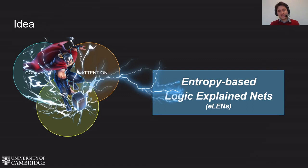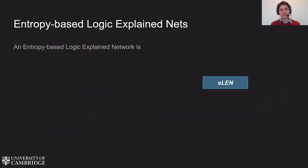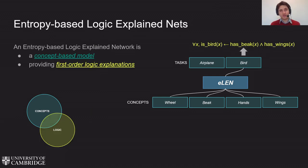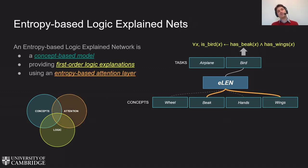Put all these ideas together and you have an entropy-based logic explained network, or ELEN. An ELEN is a concept-based model providing first-order logic explanations for its predictions using an entropy-based attention layer. In ELENs, we adapted both the architecture and loss function to make the model interpretable by design. Now, let me explain how this works bit by bit.